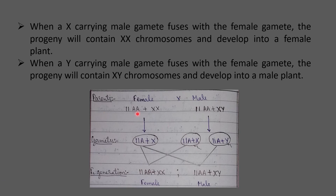In a cross between male and female plants, the 11 pairs of autosomes and one pair of sex chromosomes are visible. In the female, both sex chromosomes are similar, producing only one type of gamete with the X chromosome. The male produces two different gametes. When an X-carrying male gamete fertilizes the egg, a female plant with XX chromosomes develops; when a Y-carrying male gamete fertilizes the egg, the progeny has XY chromosomes and develops into a male.